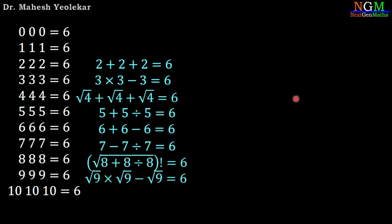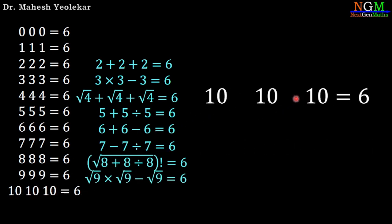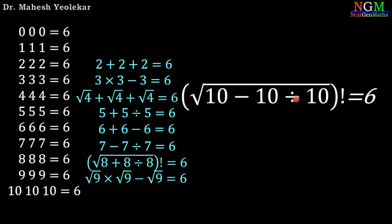Next equation: 10, 10, 10 equals 6. Apply square root: square root of 10 minus 10 divided by 10, giving 10 minus 1 equals 9, square root of 9 is 3, and 3 factorial equals 6.